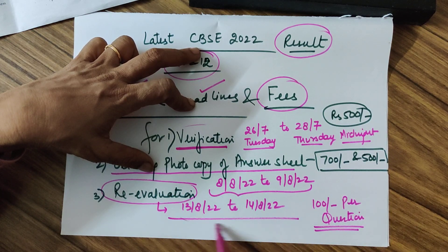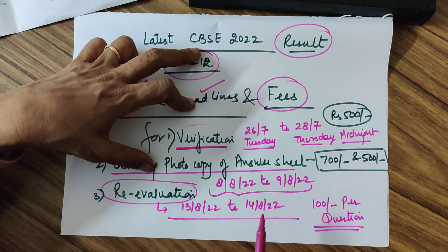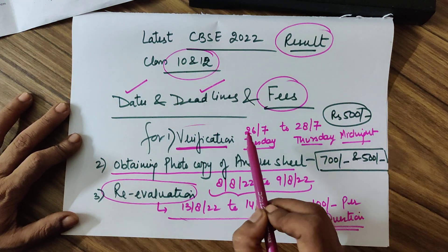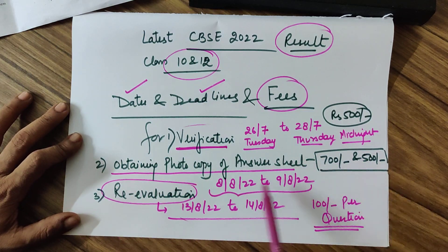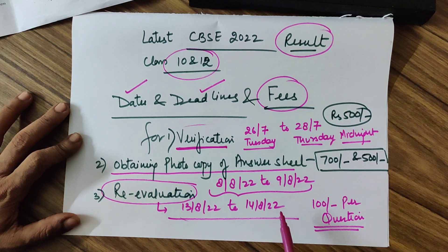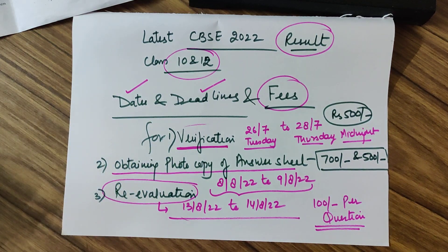The compartment exam date as proposed by CBSE is 23rd August and above. So if you apply for revaluation by 14th August, CBSE will give you your result before 23rd and you can then decide whether to appear for the compartment paper. To summarize: verification dates are 26th to 28th July; photocopy dates are 8th to 9th August; revaluation application is from 13th to 14th August, all till midnight 11:59 PM. Hope it is clear — all the best, do very well in life!